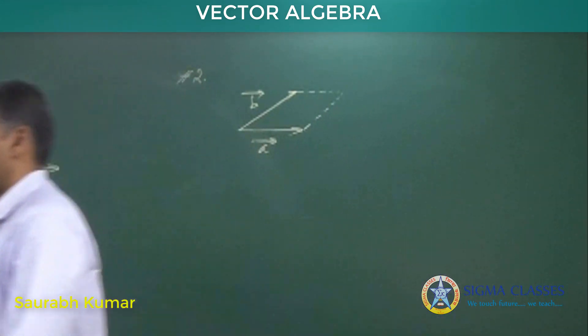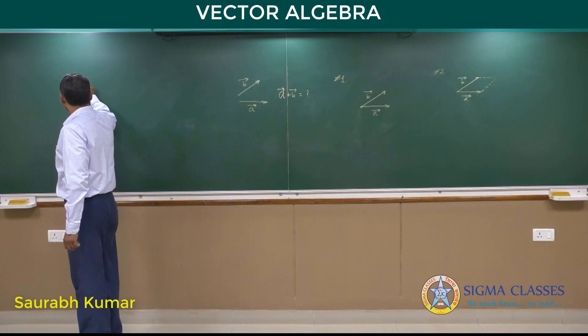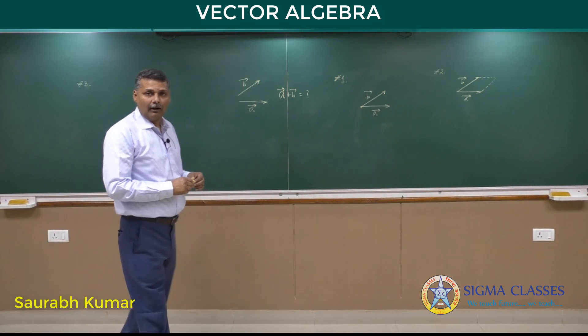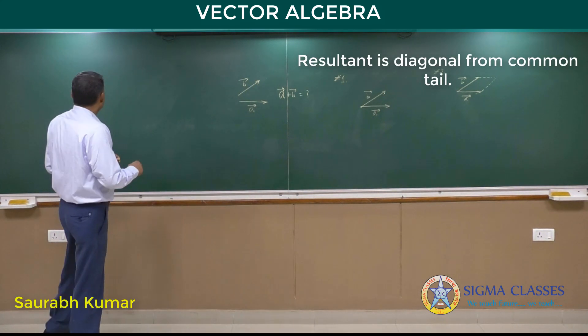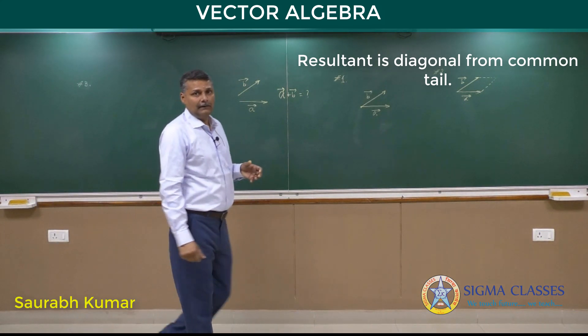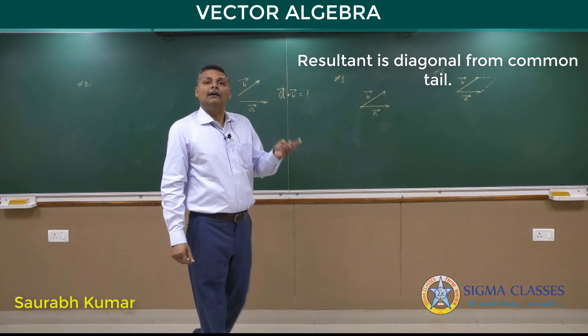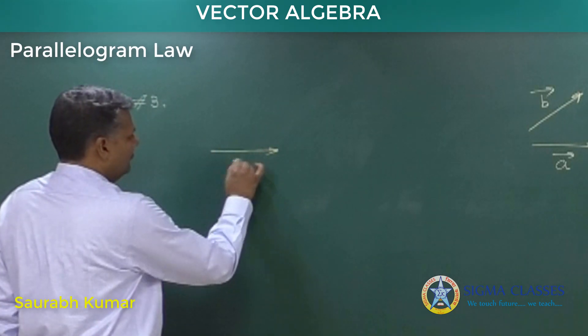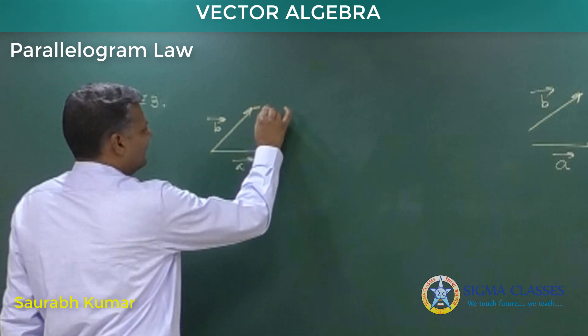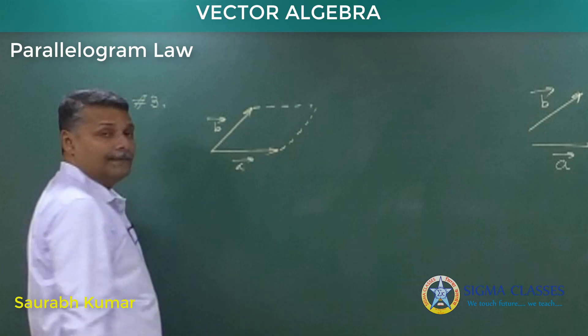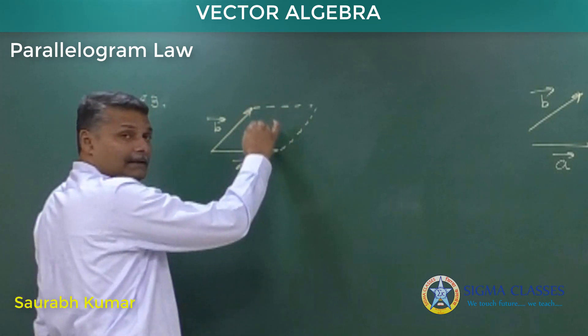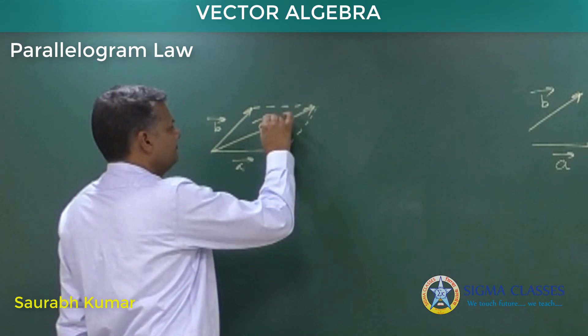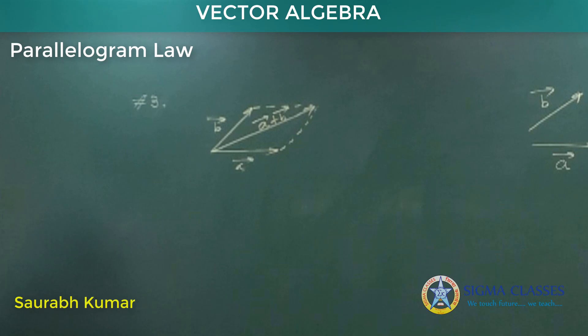Step 3: resultant is diagonal from common tail. That is, resultant is one of the diagonals - parallelogram has two diagonals. So which diagonal is resultant? Which starts from where? Common tail. So step 1, redraw both vectors from same point. Step 2, construct a parallelogram using dotted line. And step 3, diagonal. Now this diagonal joins one head to another. So resultant is diagonal from common tail. This is your resultant A plus B. So this is law of parallelogram.